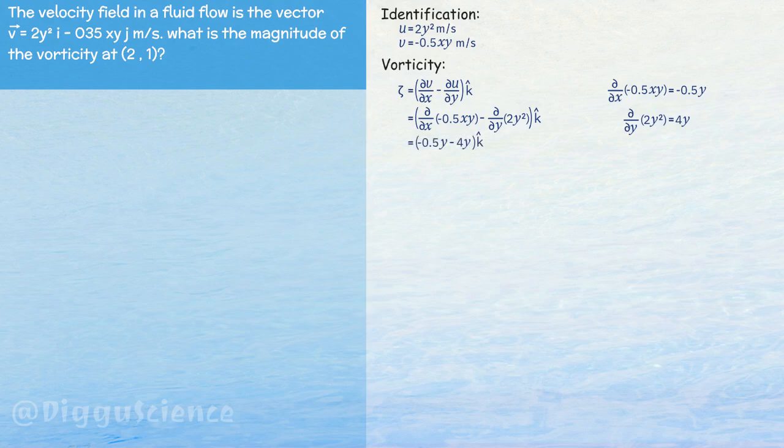Then zeta is equal to minus 0.5 y minus 4y k hat. This value is equal to minus 4.5 y k hat.